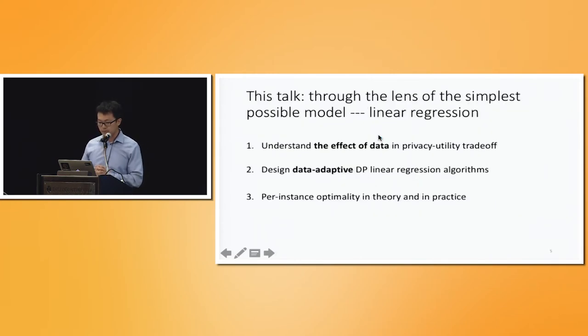So in this talk, I'm going to focus on the simplest possible model, the linear regression, and talk about the effect of specific datasets in the privacy-utility tradeoff landscape, and how we can make use of this insight to design data-adaptive, differentially private algorithms, and how they can give us results that are in some sense optimal for every single instance in theory and also in practice.